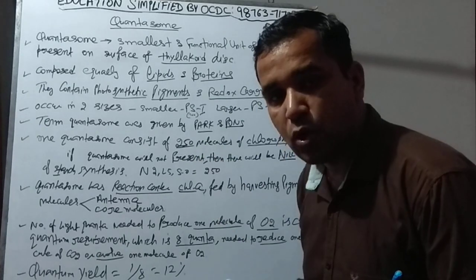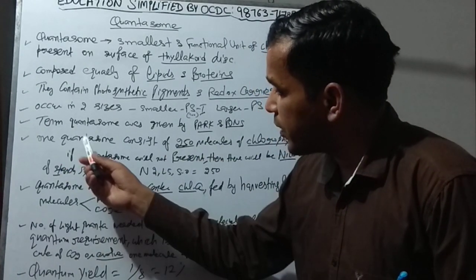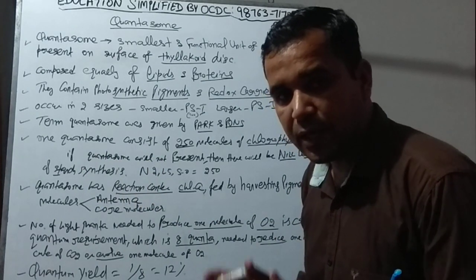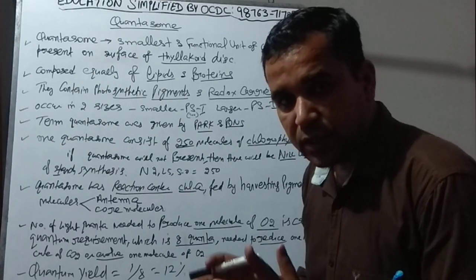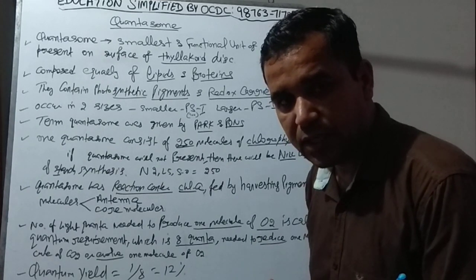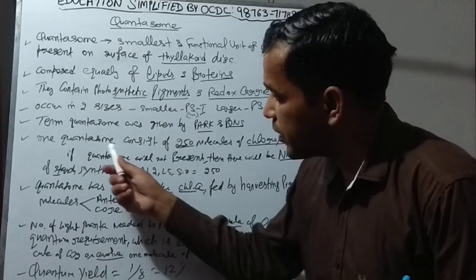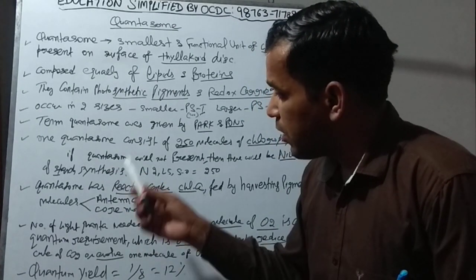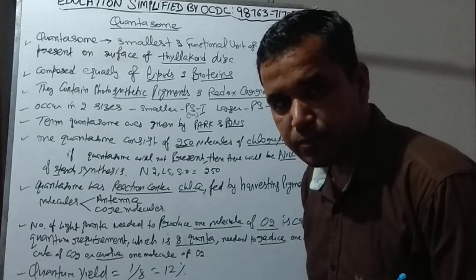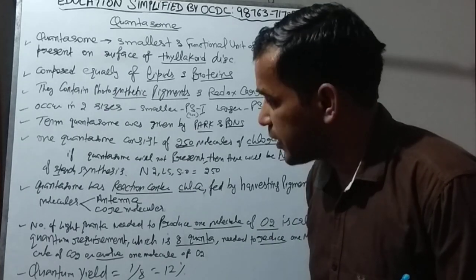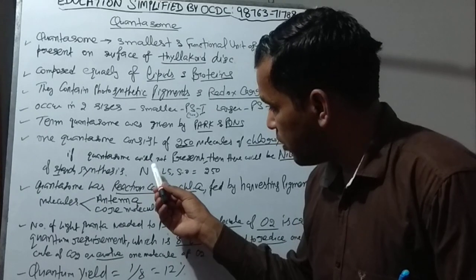It was Park and Biggins — not Park and Pawns. Now, one quantasome consists of how many chlorophyll molecules? 230 to 250 molecules of chlorophyll come together to form one quantasome. So how will we remember 250? We will create a memory image in our mind.